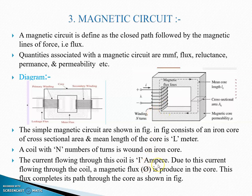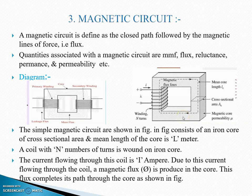i ampere — ampere current का unit है। Due to this current flowing through the coil, a magnetic flux is produced in the core. जब यह i current coil से flow होगा — यानि coil को cut करेगा — तब magnetic flux produced होगा। यह जो dotted line core में दिख रही है — यही magnetic flux line है, उसे ही हम magnetic flux बोलते हैं। This flux completes its path through the core as shown in figure.